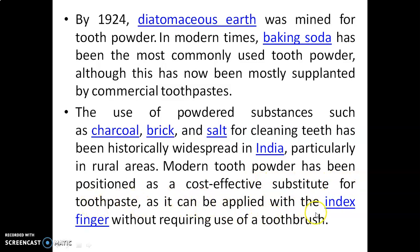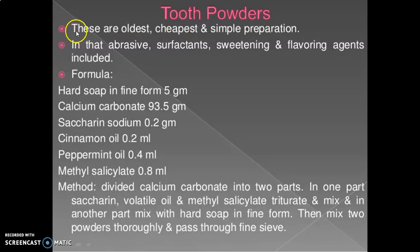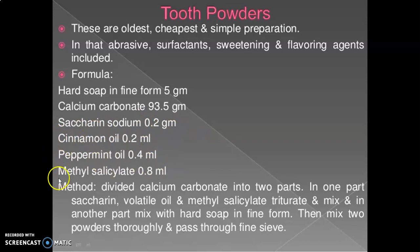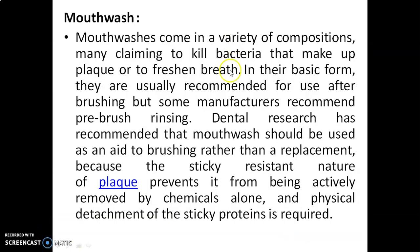Modern tooth powder is positioned as a cost-effective substitute for toothpaste and can be applied with the index finger without a toothbrush. Tooth powders are the oldest, cheapest, and simplest preparation, containing abrasive, surfactant, sweetening, and flavoring agents. Formula: hard soap (fine form) 5 g, calcium carbonate 23.5 g, saccharine sodium 0.2 g, cinnamon oil 0.2 mL, peppermint oil 0.4 mL, methyl salicylate 0.8 mL. Method: divide calcium carbonate into two parts; in one part triturate with saccharine, volatile oils, and methyl salicylate; in the other part mix with hard soap in fine form; combine the two powders thoroughly and pass through a fine sieve.